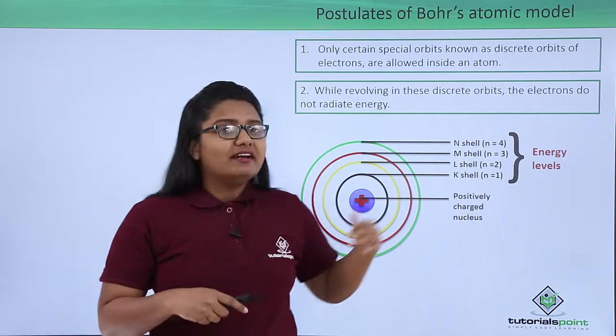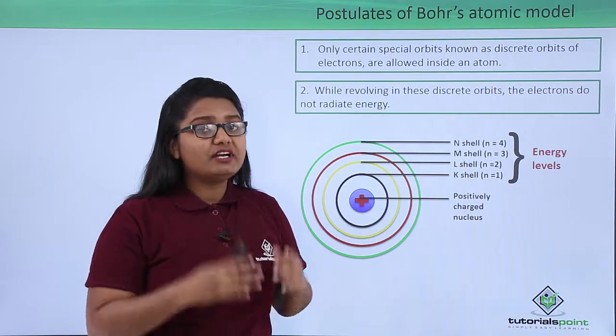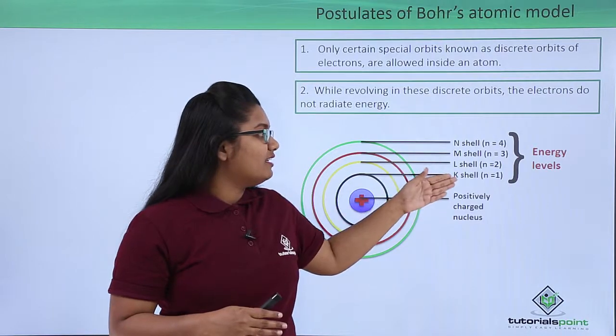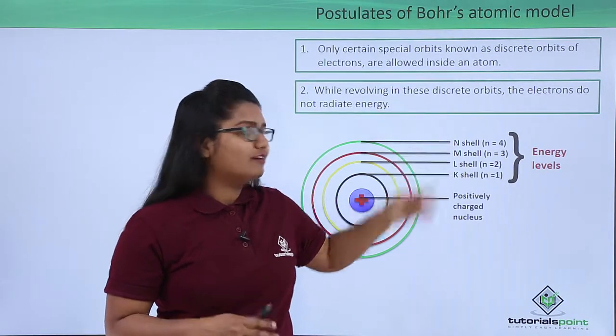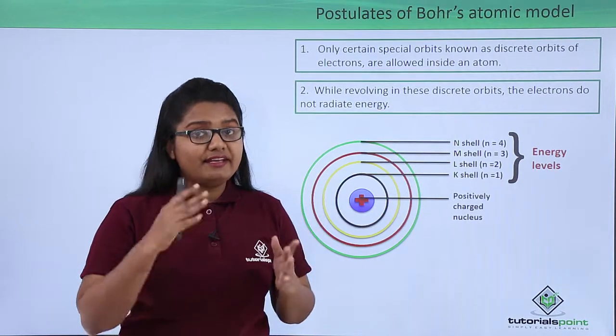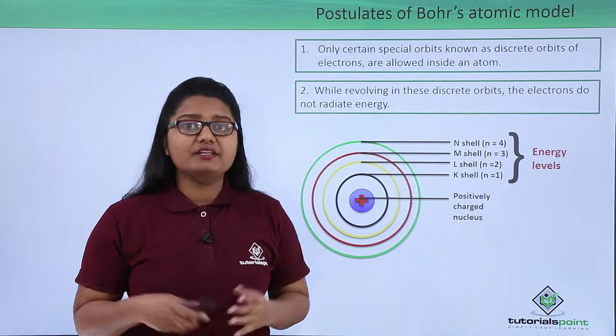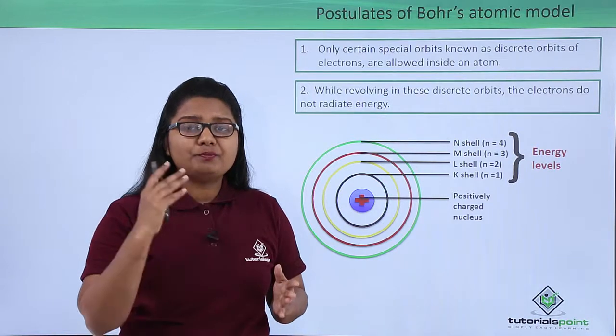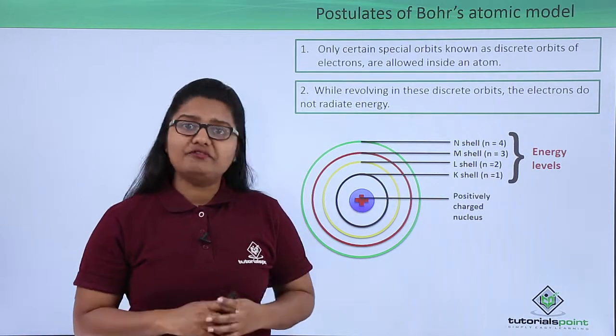So all these shells represent a particular amount of energy. It means K shell, L shell, M shell, and N shell all have their own particular amount of energy, and any electron in those shells also possesses that much amount of energy.